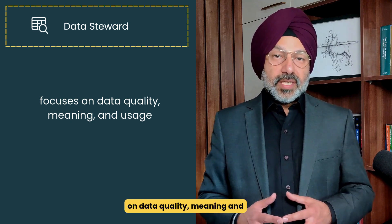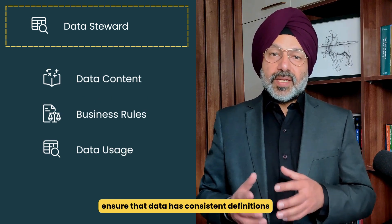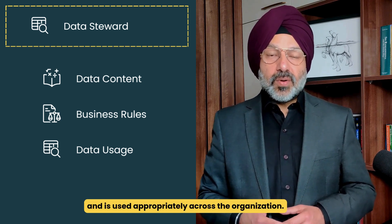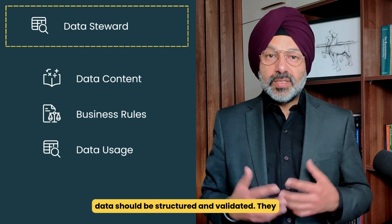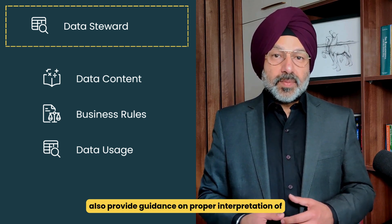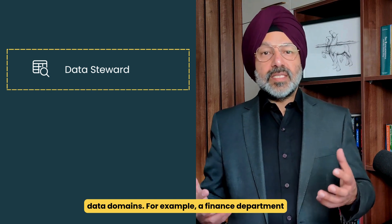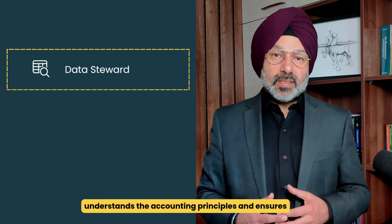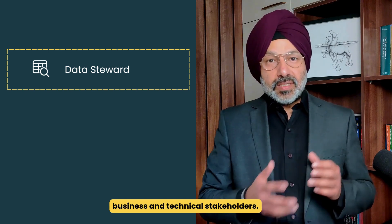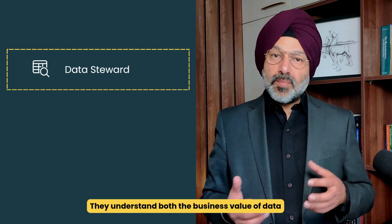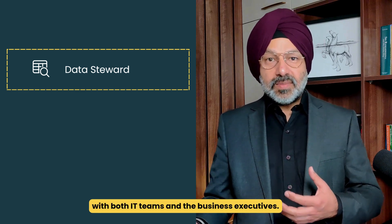Next is the data steward. The data steward role focuses on data quality, meaning, and usage. They are concerned with data content and its context, ensuring data has consistent definitions and is used appropriately across the organization. They look at the business rules associated with the data, helping define and maintain rules that govern how data should be structured and validated, and provide guidance on proper interpretation of data elements to prevent misuse. Data stewards typically have subject matter expertise in specific data domains — for example, a finance department might have a financial data steward. They bridge the gap between business and technical stakeholders, serving as translators who can communicate effectively with both IT teams and business executives.